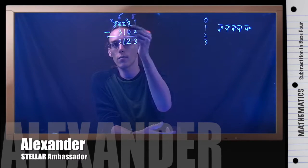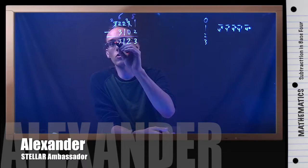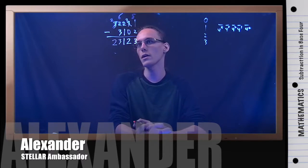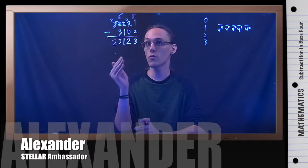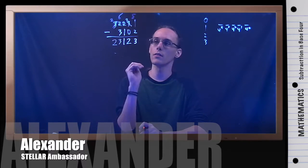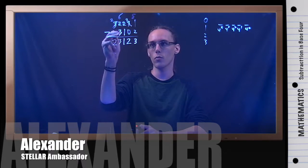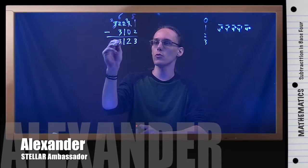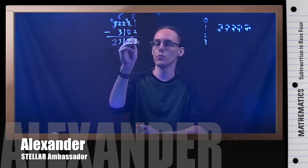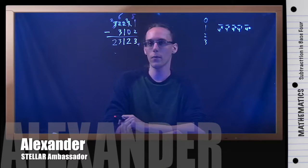Then 2 minus nothing is just 2. So in base 4, the number 3, 2, 2, 3, 1 minus 3, 1, 0, 2 comes out to be 2, 3, 1, 2, 3 in base 4. And that is this example.